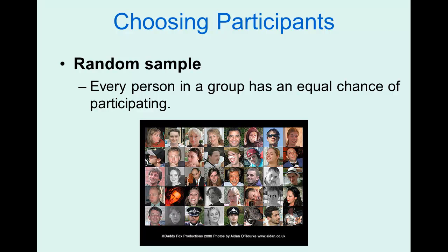If you just pick the first 40 people who show up at a BSU football game, that's not random. There might be biases — maybe the people who show up early are very conscientious, or maybe they're really hardcore fans, and those groups might have some bias about how they felt about the field. Ideally, you'd have a list of all BSU fans and then randomly draw 50 or 500 of those names and ask them to be in your study. That would be much more random.